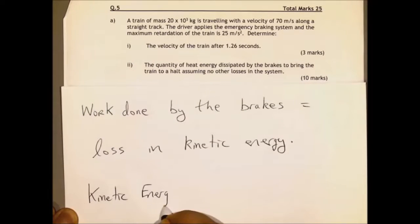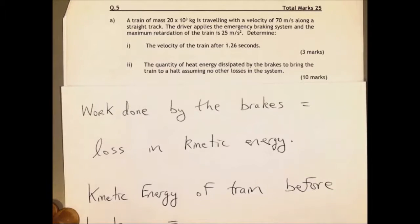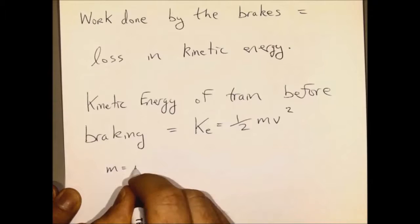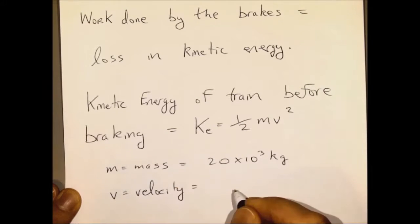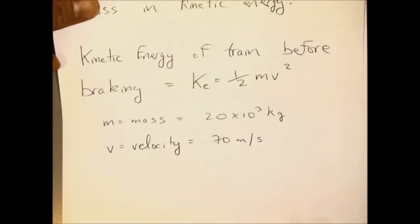And we plug in the values for the mass and the velocity of the train before the brakes were applied. The mass there being given as 20,000 kilos and it was traveling at 70 meters per second. So plug in those values.